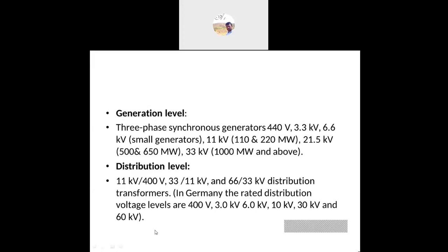At the generation level, we generate three-phase 400/450 volts or 3.3 kV or 6.6 kV for small generators. For thermal, hydel, and nuclear power plants the generators are mainly 11 kV. These are synchronous generators combined with turbines. Whatever the megawatt rating, the generated voltage is 11 kV.